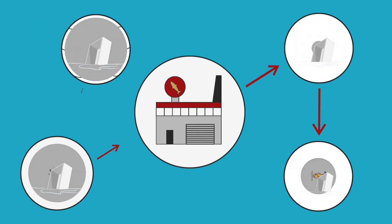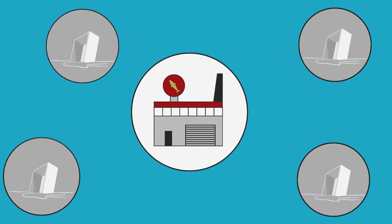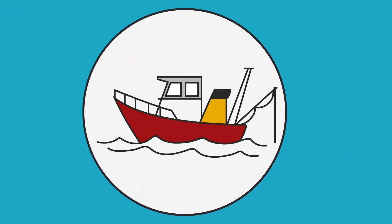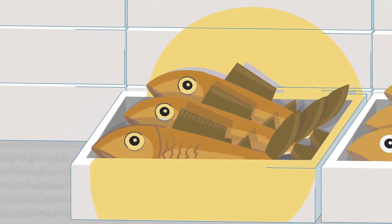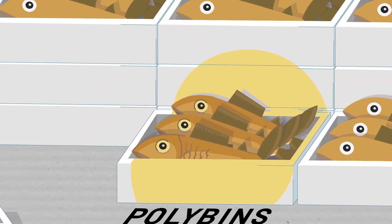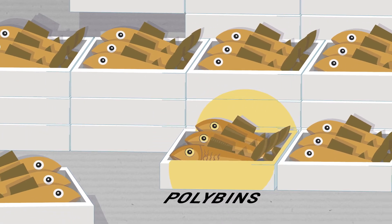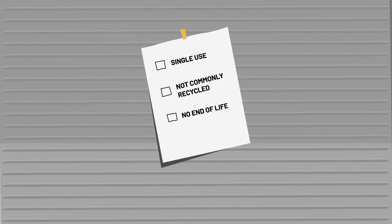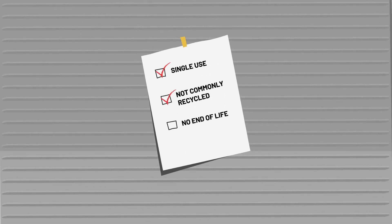They found that plastics are used extensively throughout the fin fish supply chain in both land and sea-based operations. A key area of concern was poly bins, a polystyrene packaging product used in shipping and packaging. They're single-use, not commonly recycled, and there's no end-of-life accountability.